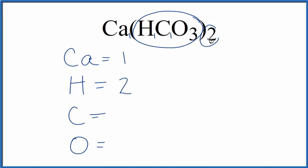We have one carbon, two times one, two carbons, and two times three, six oxygen atoms in Ca(HCO₃)₂.